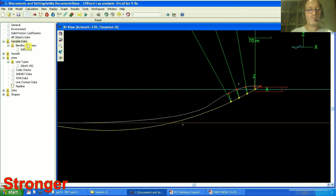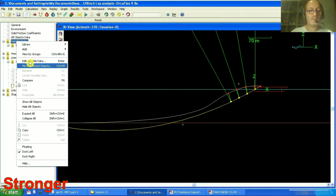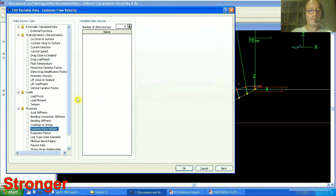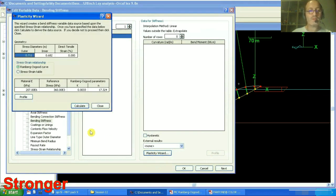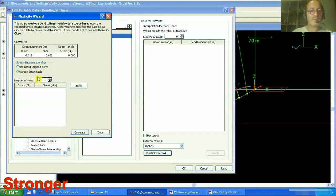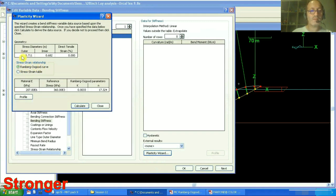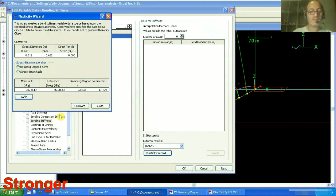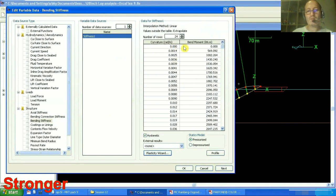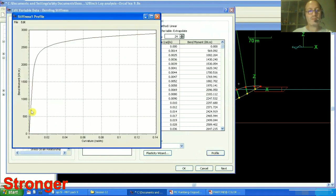Now let's see how we do it in OrcaFlex. Like the previous example, first we go to the variable data and go to edit variable data. And here, we select the bending stiffness. And there is a plasticity wizard. If we press on it here, we can select the stress strain table or Ramberg Osgood curve. And then we can put these inputs. And here we can see the profile of the stress strain. And if we press on calculate, here we see the moment curvature data and we can see the curve as well.